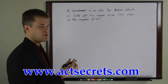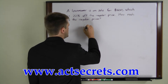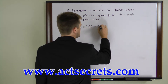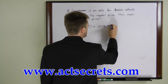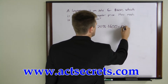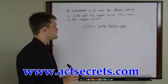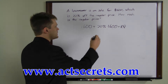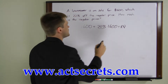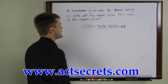For instance, if you started out by writing this problem as $1,600 plus 20% times $1,600 equals the regular price, you're going to wind up with the wrong number. The reason for this is that you're taking 20% of the sale price instead of 20% of the regular price, like the question states.